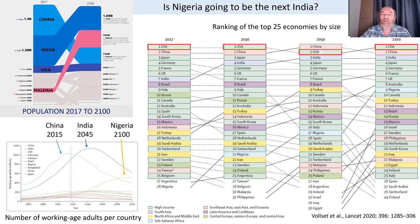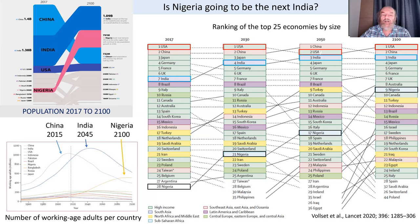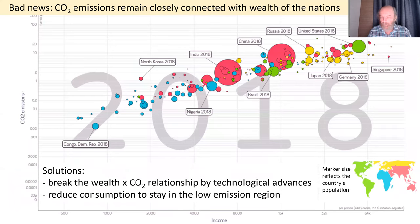Among the top 25 economies, the US is predicted to lose the top spot to China at mid-century, but regain it at end of century due to China's declining demography. India should rise to third spot, and Nigeria — currently ranked 28th — is predicted to rise to ninth by end of century. When thinking about ecological footprint of different countries, some conclusions are quite surprising unless you know the data.